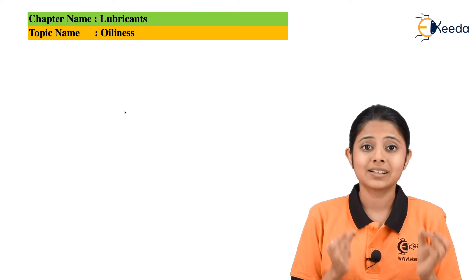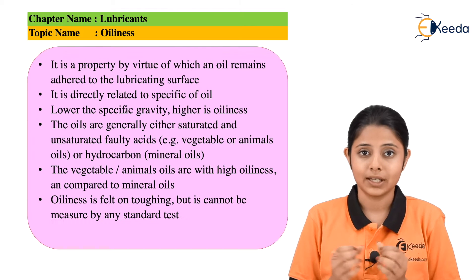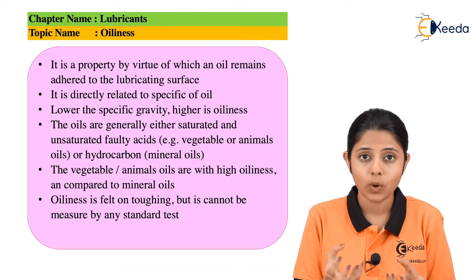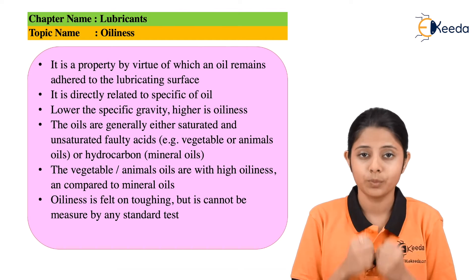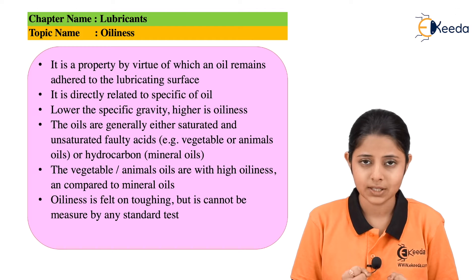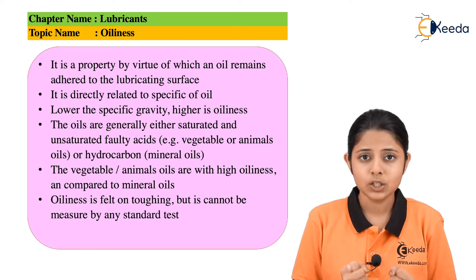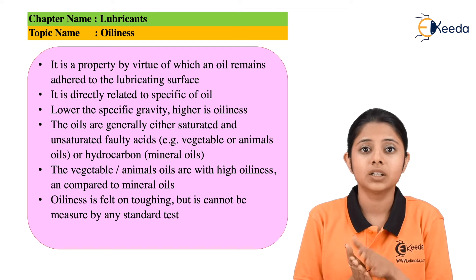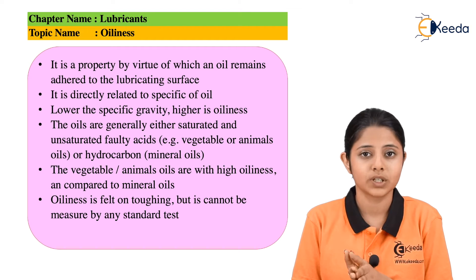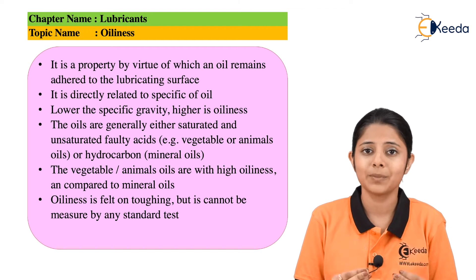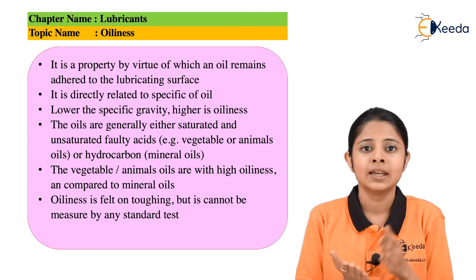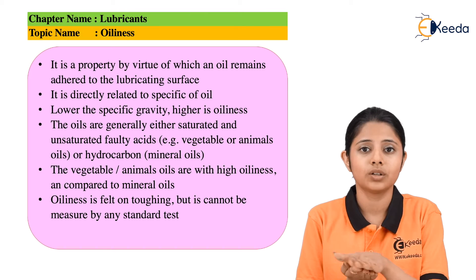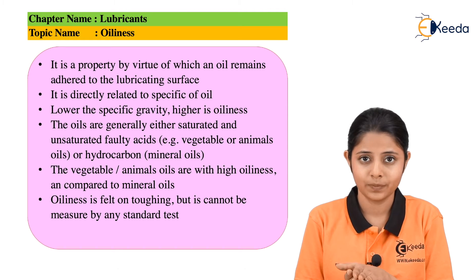So what exactly is oiliness? Oiliness is a property acquired by certain lubricants, which are generally oils, and these lubricants, by virtue of this property, stay adhered to the surface. That means they stay stuck on the surface because of the oiliness.